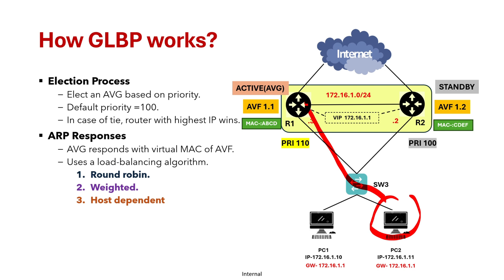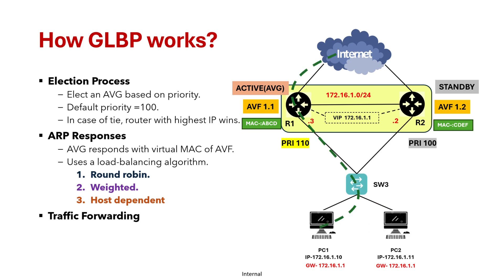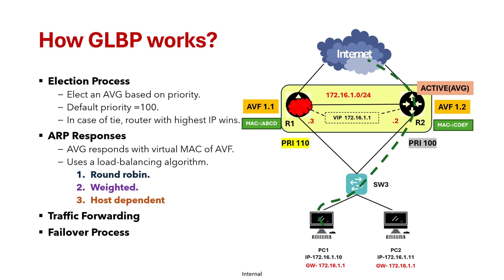Once the algorithm is decided, the host sends traffic to the assigned AVF. In a round-robin scenario, PC1 will send traffic via R1. If an AVF fails, the traffic will take the path via R2. And if R1 goes down entirely, the AVG role also fails — but since a standby was already selected during GLBP configuration, R2 will take over the active AVG role, providing seamless transition without disrupting traffic.